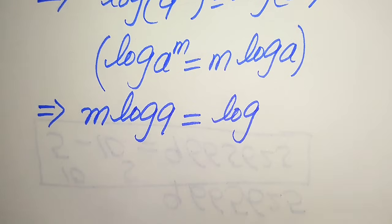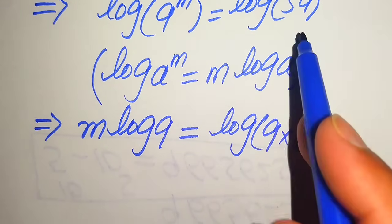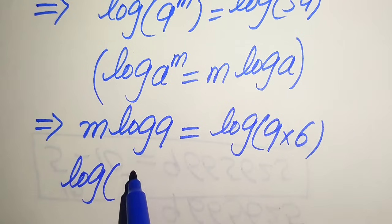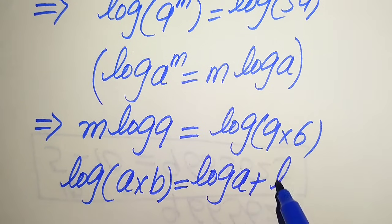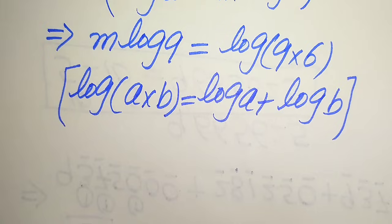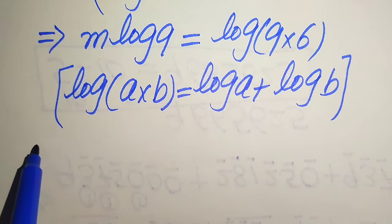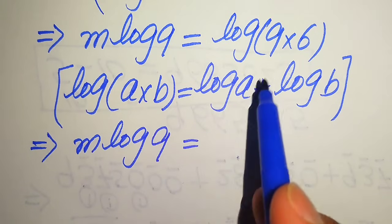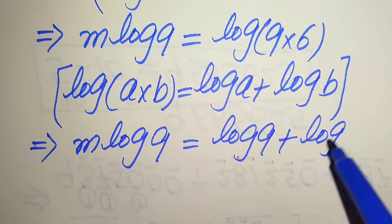We write 54 as 9 times 6, so 9 multiplied by 6 gives 54. We also know that log of a times b equals log a plus log b. Applying this product property on the right-hand side, we get m times log 9 equals log 9 plus log 6.